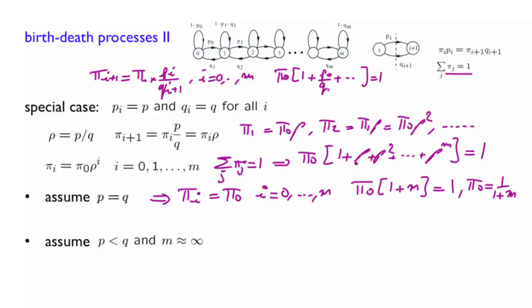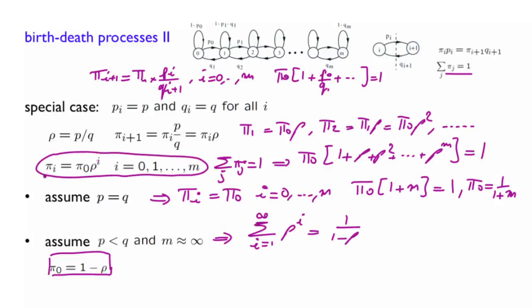What it means is that this infinite series, when m goes to infinity, is the geometric series. This series is going to be 1 over 1 minus rho. Since pi of 0 is 1 over this infinite series, we end up having pi 0 equals 1 minus rho. Since we have pi of i equals pi 0 times rho to the power i, we have pi of i equals 1 minus rho times rho to the power i.